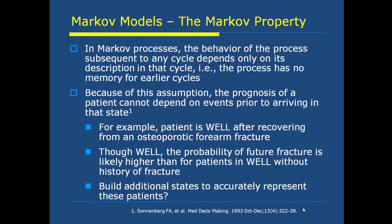In a Markov process, the behavior subsequent to any cycle depends only on the description in that cycle — the process has no memory of earlier cycles. Because of this assumption, the prognosis of a patient cannot depend on events prior to arriving in that state. For example, a patient who is well after recovering from an osteoporotic forearm fracture — though in the well state — has a probability of future fracture likely higher than for patients in well without a history of fracture. Build additional states to accurately represent these patients.